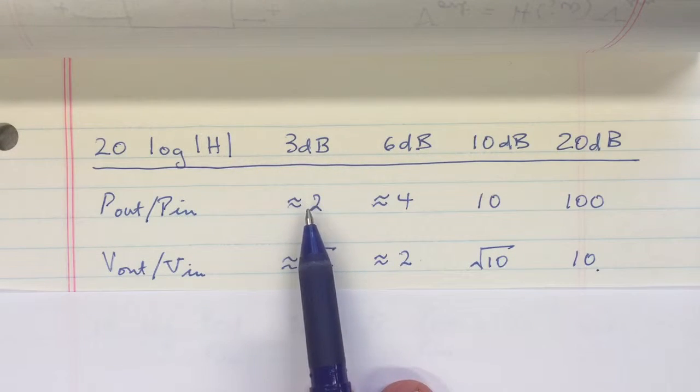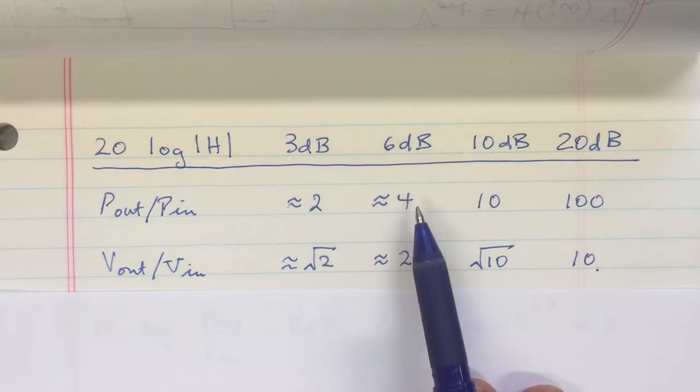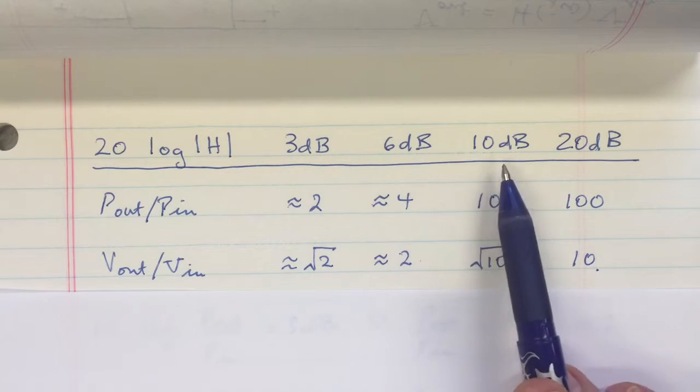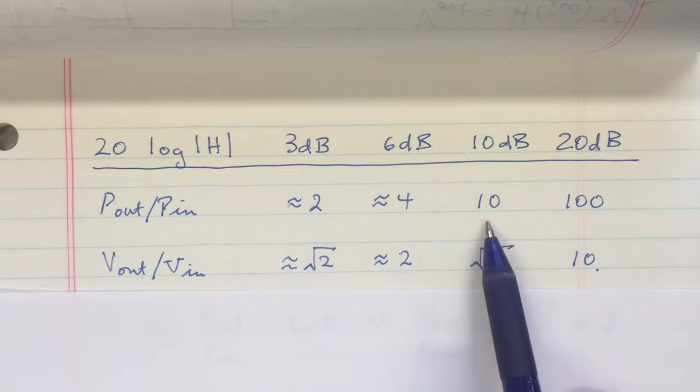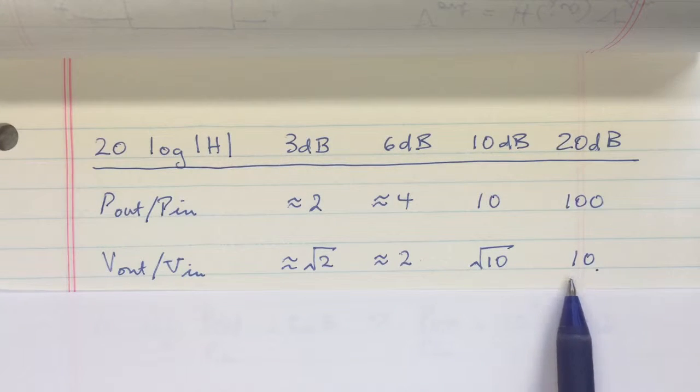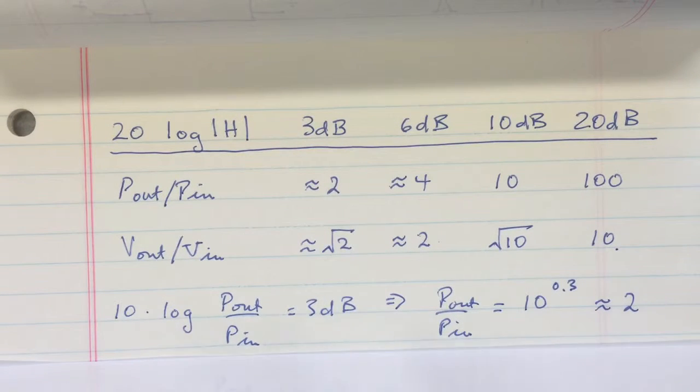It represents a power ratio of two or a voltage ratio of square root of two. Six decibels is a good one to know—it's a power ratio of four or a voltage ratio of two. Ten decibels is another one because it's a power ratio of ten, and twenty decibels is important because it corresponds to a voltage ratio of ten.